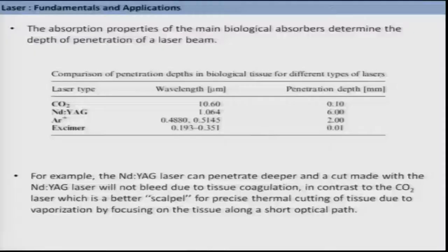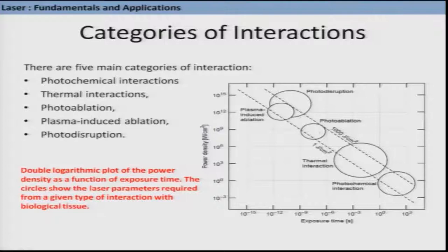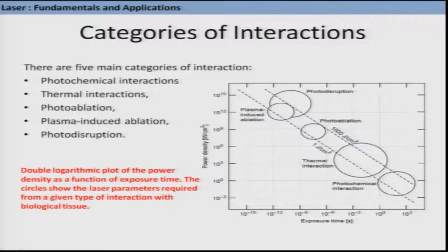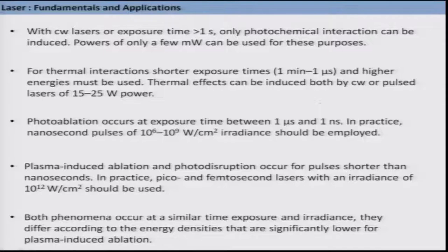What are the different types of interactions between biological tissues and laser light? We can categorize this interaction into five parts: photochemical interaction, thermal interaction, plasma-induced ablation, photoablation, and photodisruption. An adjacent plot shows the chances of having each type of interaction as a function of laser exposure time. Using continuous wave laser or exposure time greater than one second, only photochemical interaction can be induced, requiring approximately one milliwatt of power. For thermal interaction, a shorter exposure time in the order of microseconds is needed.